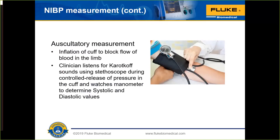The clinician listens for Korotkoff sounds — the sounds made when blood stops flowing and when it just starts flowing again. While listening with a stethoscope on the artery in the limb where the cuff is placed, they let the air pressure in the cuff leak off slowly, going from no Korotkoff sound, to the first Korotkoff sound, to the point when blood starts flowing again. That's how the auscultatory pressure measurement is done.